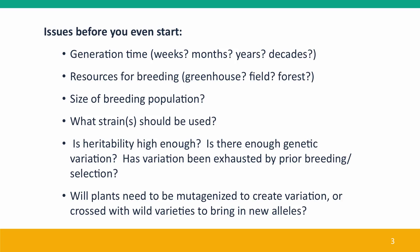With plant breeding there's an awful lot of issues to consider before you even start. You have to know the generation time — is this an organism that reproduces in weeks, like radishes, or are you working with trees that may take decades to reach reproductive maturity? What kind of resources do you have? Will you need a greenhouse or a forest? How big is your breeding population, and what strains will you use? Very important is whether there's high enough heritability for the traits you want, and whether there's enough genetic variation in your population, or has it been exhausted by previous rounds of breeding and selection? You may need to mutagenize plants to create new variation, or cross them with wild varieties to bring in new alleles missing from cultivated populations.